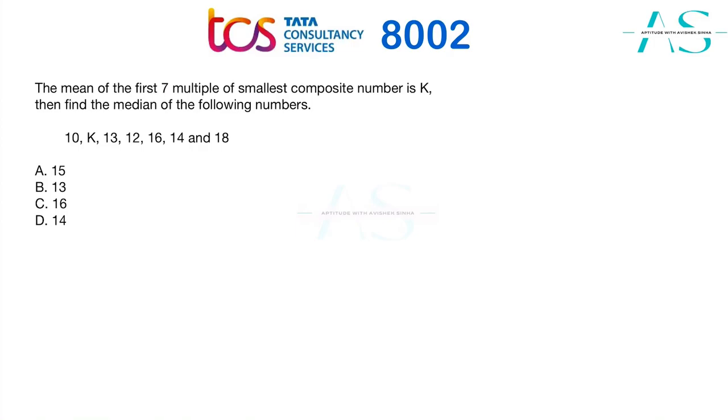Hello everyone, welcome back to the second question on the 1000 must-do question series for TCS examination. This is the second question of that particular series. Looking at the question, it's a question from the topic statistics. The mean of the first seven multiples of the smallest composite number is k. Find the median of the following set of numbers.